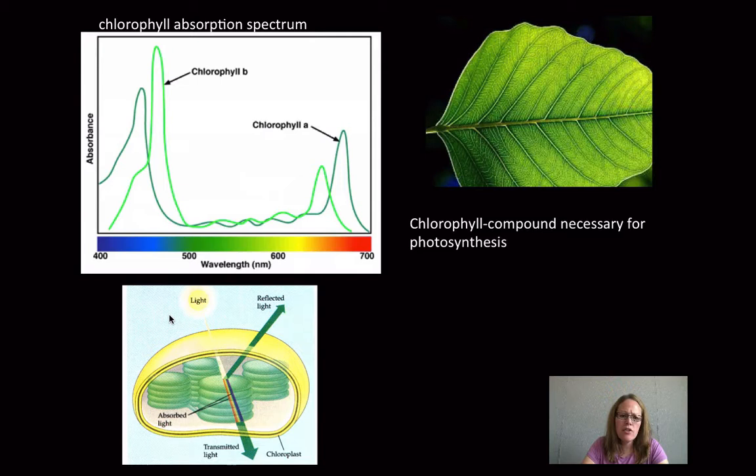These chlorophylls are actually what absorb certain wavelengths of light. If you remember the electromagnetic spectrum, you can see the colors from blue to red. Chlorophylls like to absorb reds and blues. And you can see at the bottom of the screen, if you've ever wondered why is a leaf green...